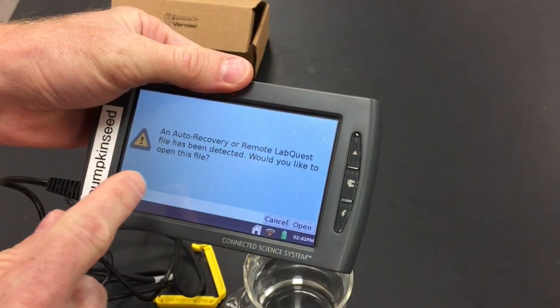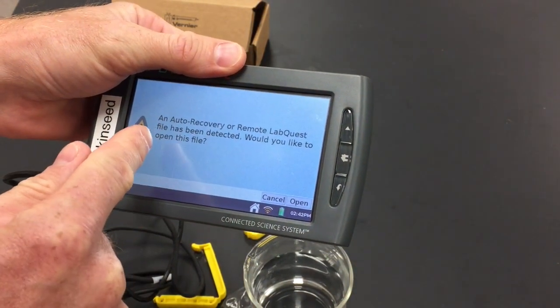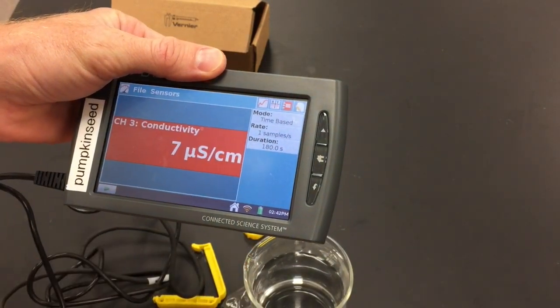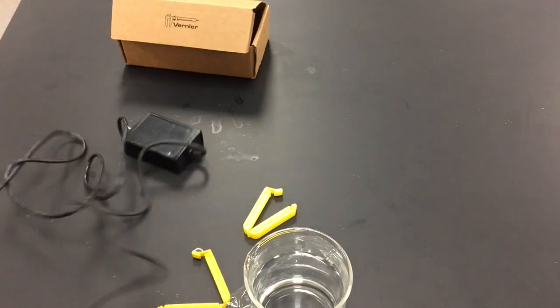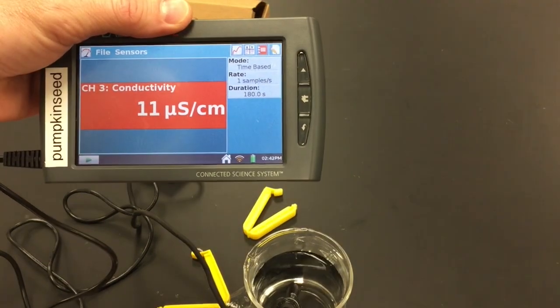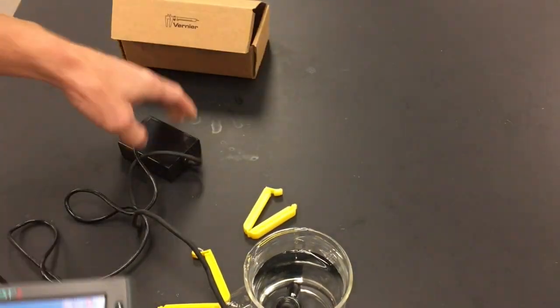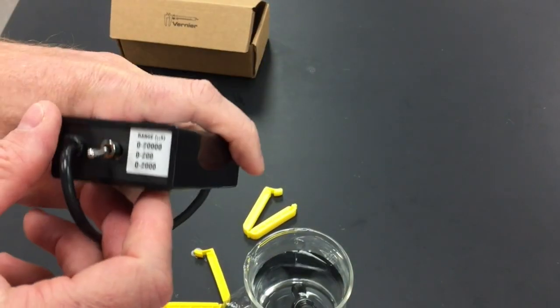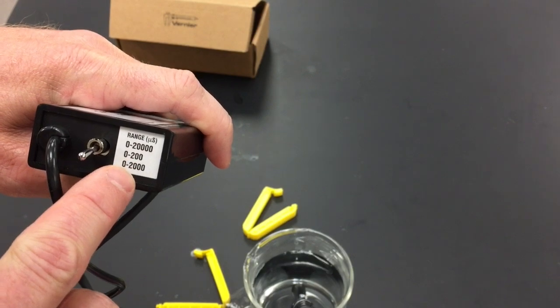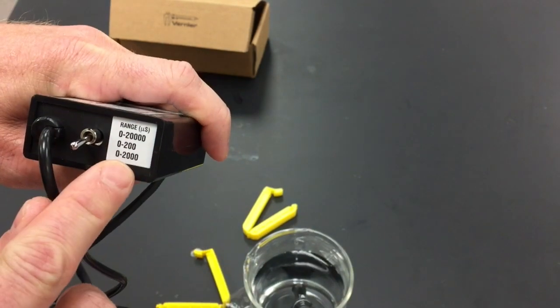Sometimes when you turn on your Lab Quest device, it will ask if you want to open up any data from the last person who used it. I don't, so I'm going to cancel. I can put my conductivity meter in the distilled or purified water and it should come up with a pretty low number. The setting on your conductivity probe should probably be on the zero to mid-range, the zero to 2000 setting.